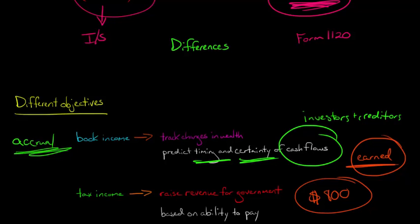However, with taxable income, the US government doesn't care whether it's been earned or not. This isn't information for investors and creditors. What they care about is the ability to pay. And when you receive that prepaid rent as the landlord, they say, aha, you just got $800.